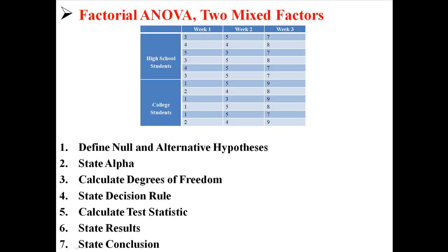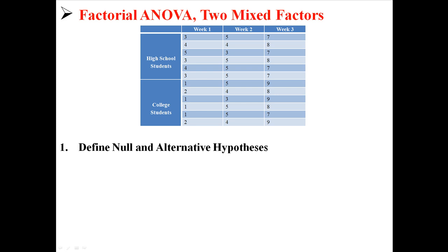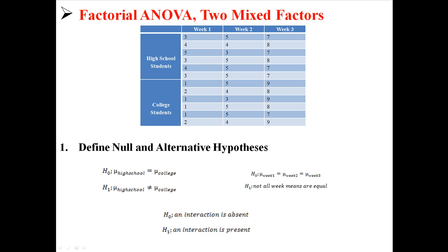We have the same seven hypothesis steps as a factorial ANOVA with two independent factors. First, we will state our null and alternative hypotheses. We have three: one for school, where high school will equal college and we're testing to see if they're different; one for week, where all three weeks are equal and we're testing to see if they're different; and one for interaction, where the interaction is absent and we're testing to see if an interaction is present.